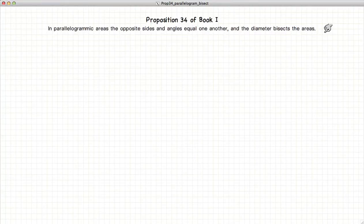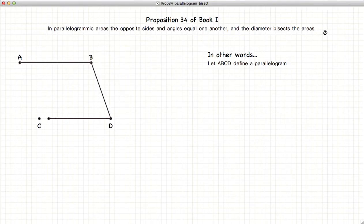This video presentation is going to be on Proposition 34 of Book 1, which states that if you have a parallelogram, here's our parallelogram, where the two sides are parallel, and these two sides are parallel.